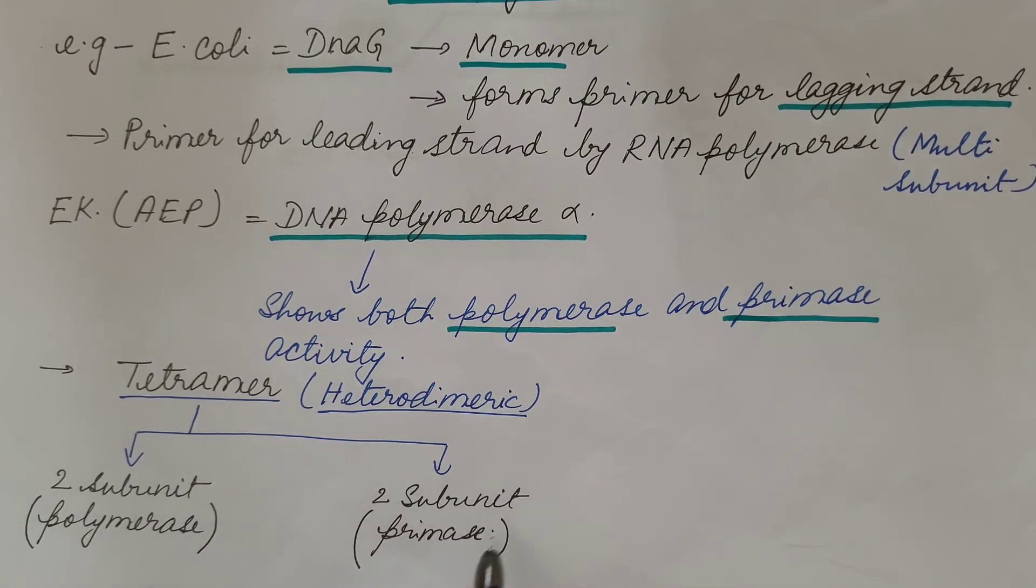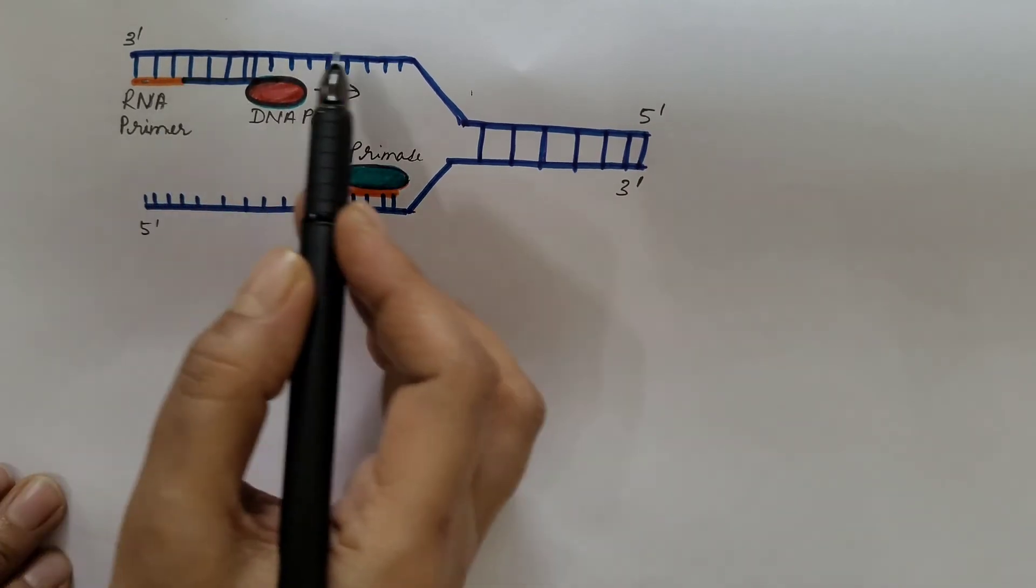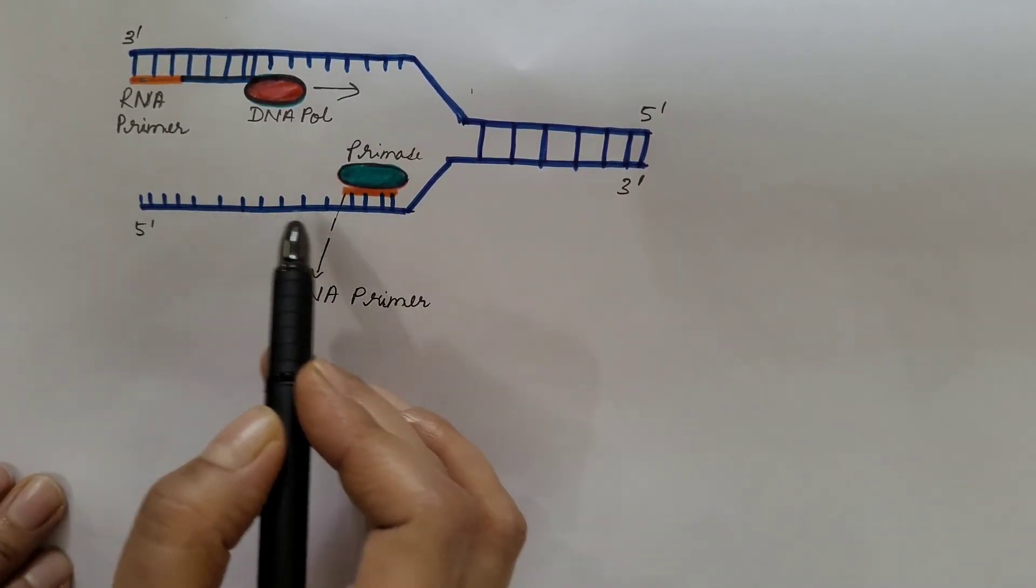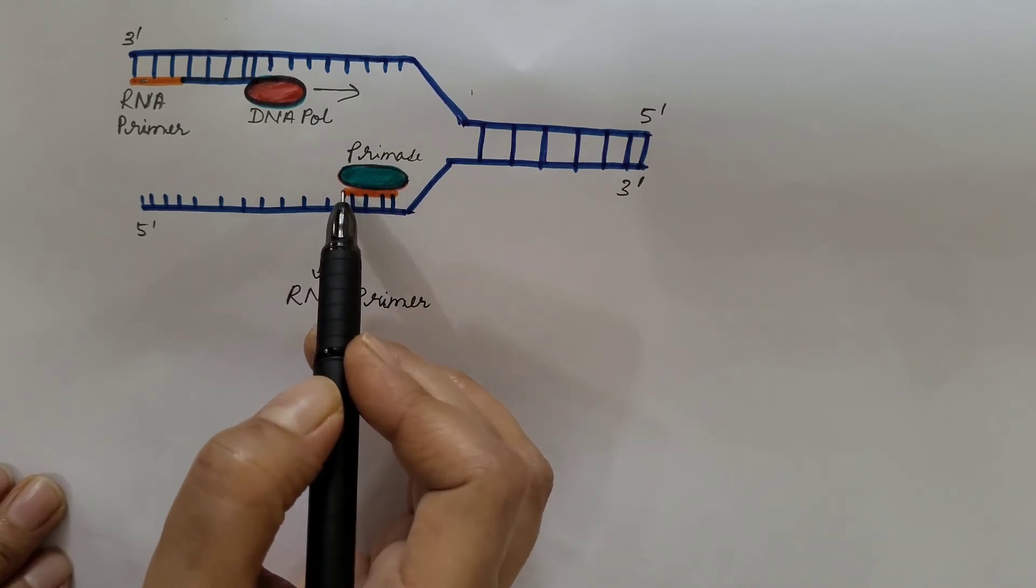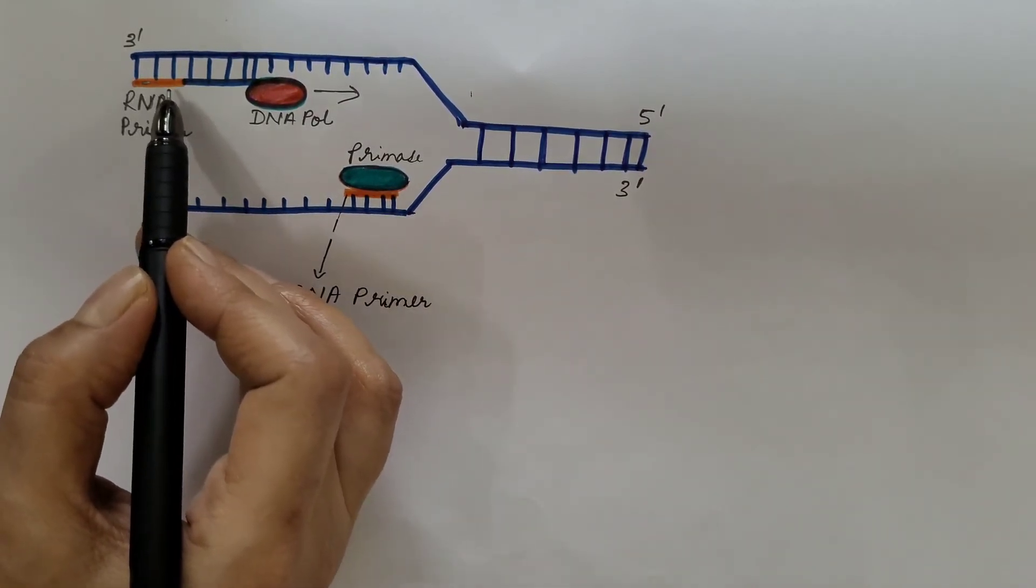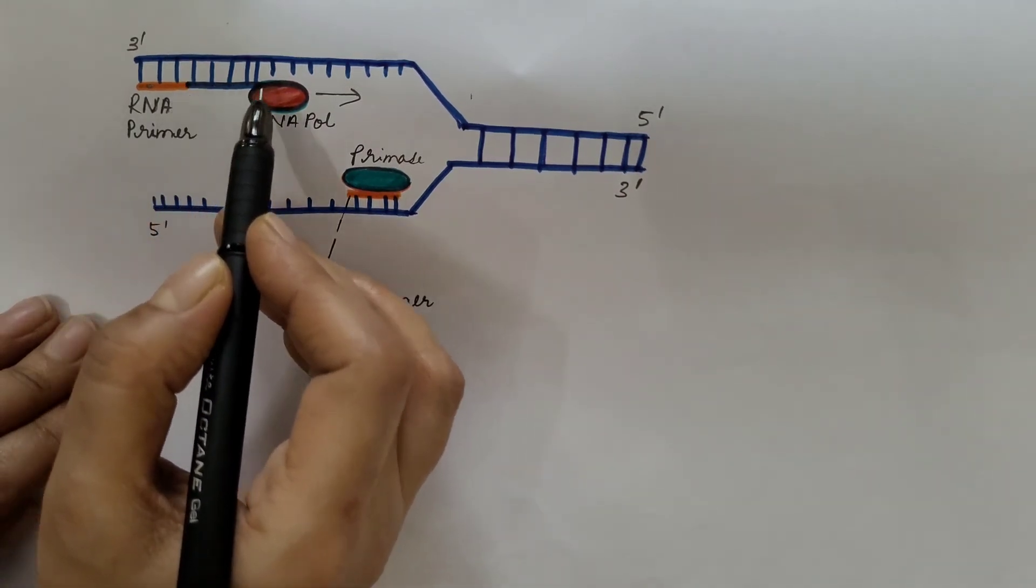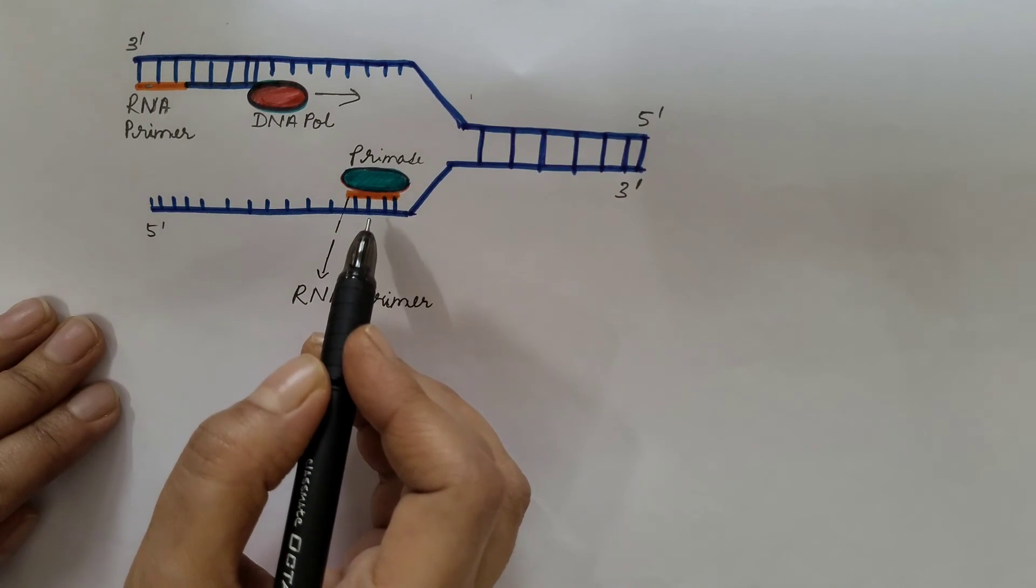So this is the DNA. The two strands are separated which serve as the template. Primase comes and synthesizes the RNA primer, then DNA polymerase comes and helps in the chain elongation. In this way, the new strands are synthesized and DNA is replicated.